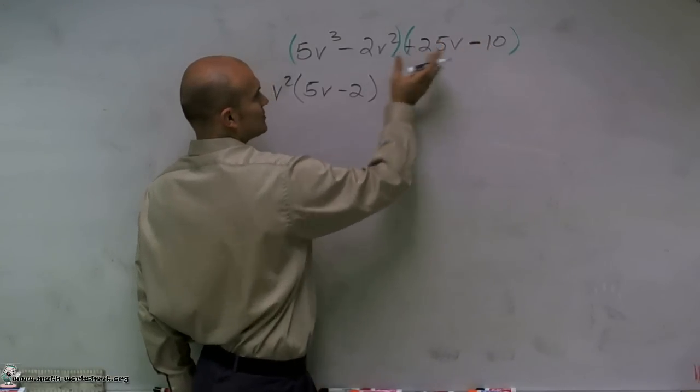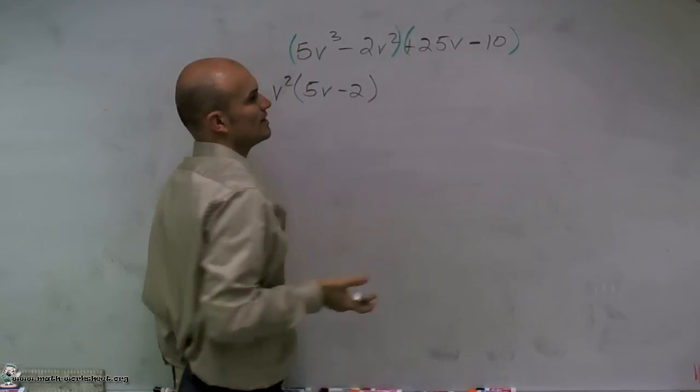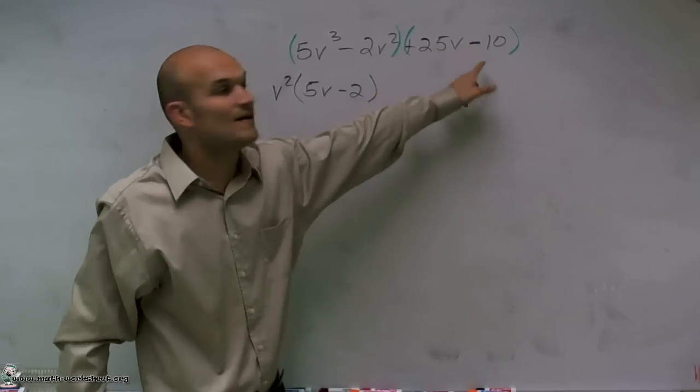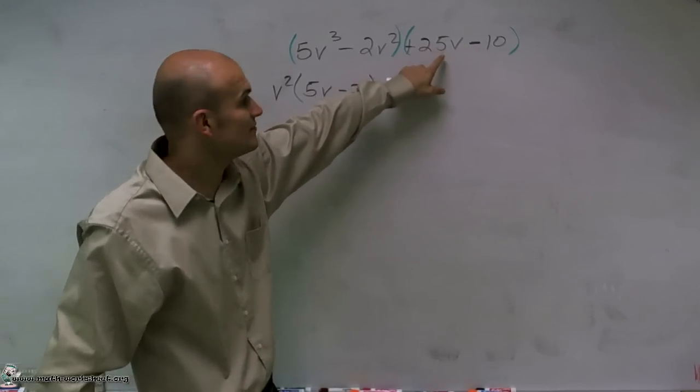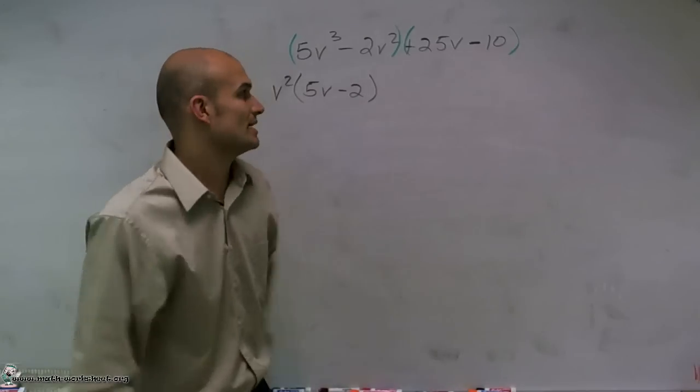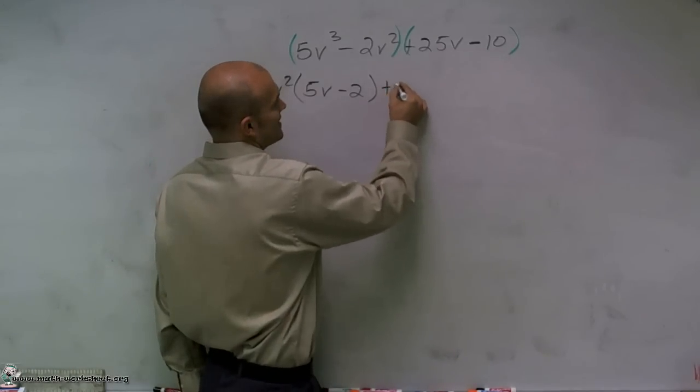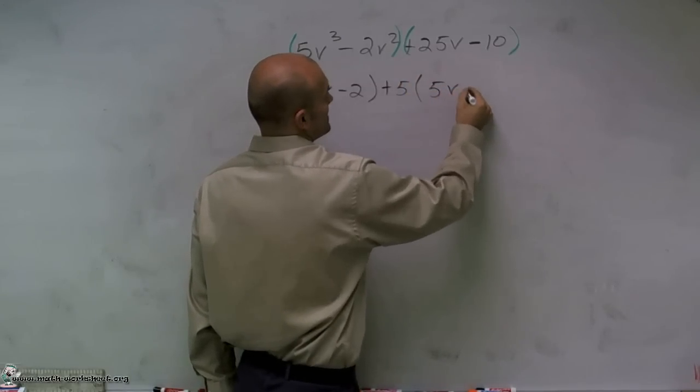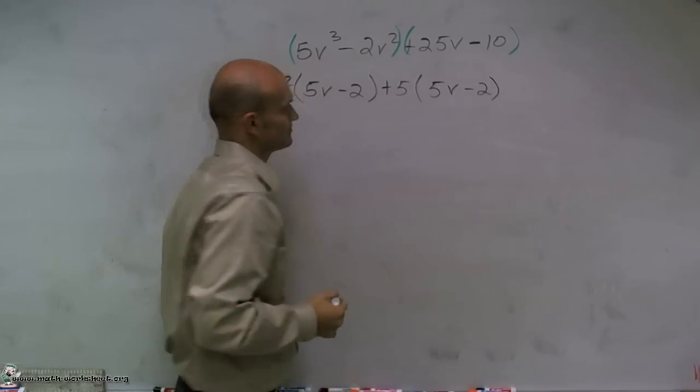So if I want to go ahead and factor this out, I look at these and ask what is my greatest common factor that these two share? Obviously, they both share a 5 as 5 goes into 25V and 5 goes into negative 10. So I'll factor out a positive 5, which will just leave me with 5V minus 2.